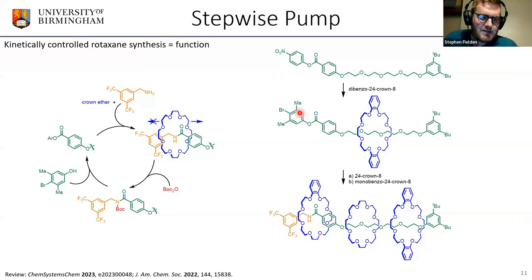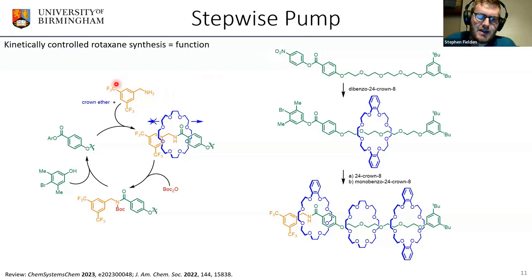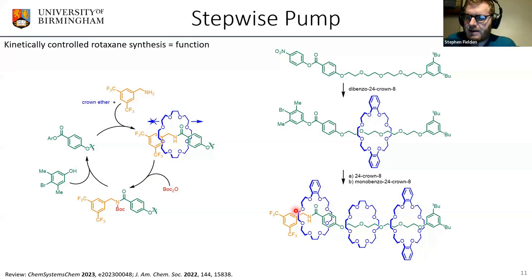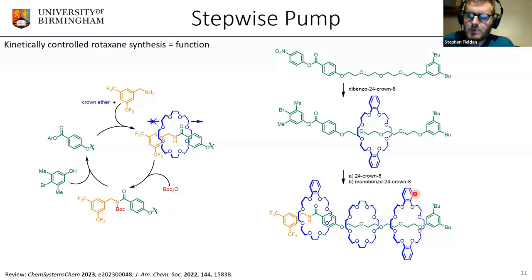We can also use the kinetically controlled nature of this rotaxane synthesis to make machines directly. For example, using the amide formation reaction, we can make a simple pump-type molecule with a thread that collects macrocycles and an activated ester. Adding an amine and a crown ether makes a rotaxane; we then derivatize the amide further, pushing the macrocycle away and regenerating the reactive site. Repeating this three times loads three macrocycles onto the same pump, held in a kinetically trapped, sequence-specific order.